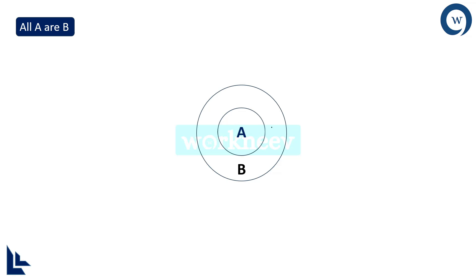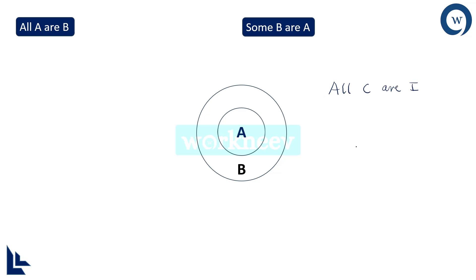If I say All A are B is correct, I should also agree that some portion of B belongs to A — that is called the reversal of this statement. All A belongs to B means some portion of B is also occupied by A. For example, if I say all chocolates are ice creams, chocolate has to be the inner circle and ice cream the outer circle. The only condition is this chocolate portion has to be inside the ice cream portion.